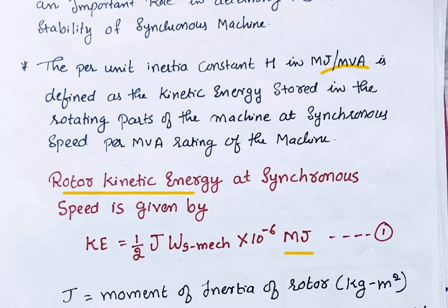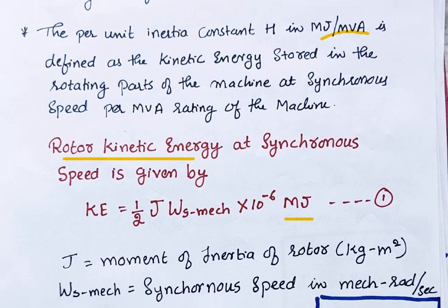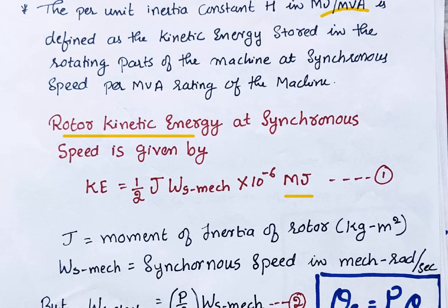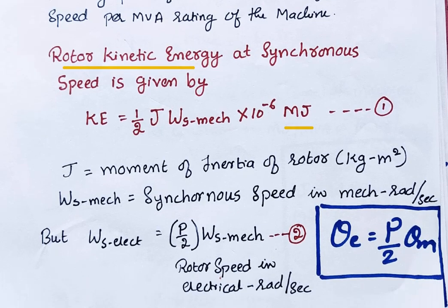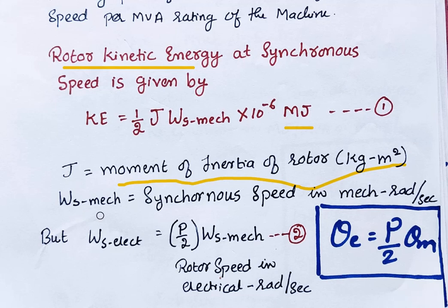J is the moment of inertia of the rotor, in kg·m². In some books it is given as I, but J is moment of inertia of the rotor. Omega_S is the synchronous speed, mechanical, given in radians per second.